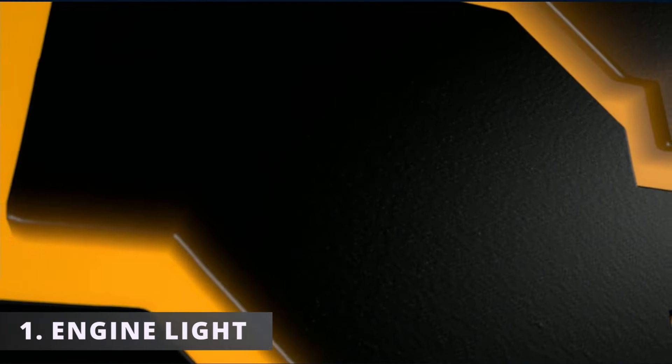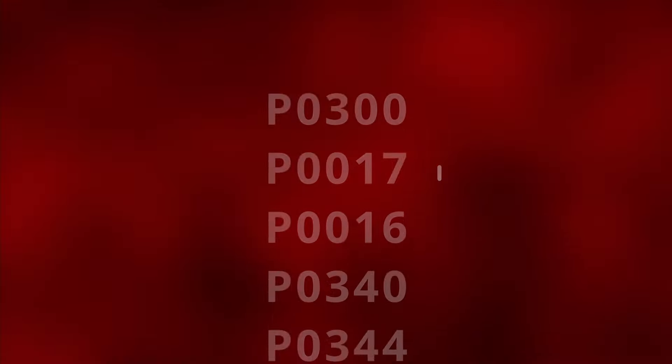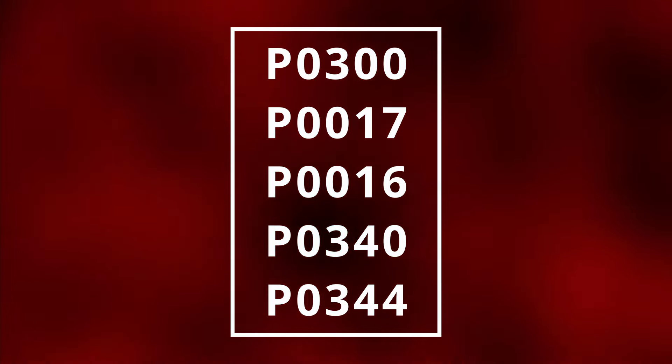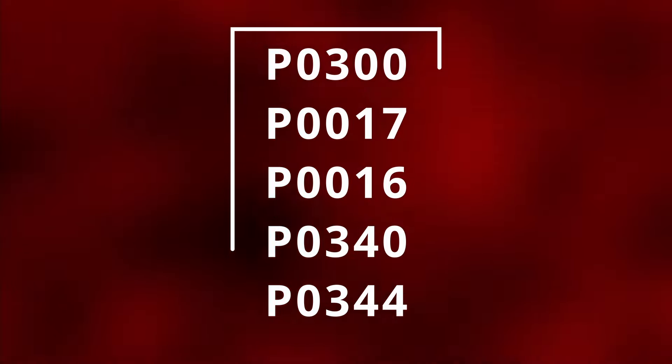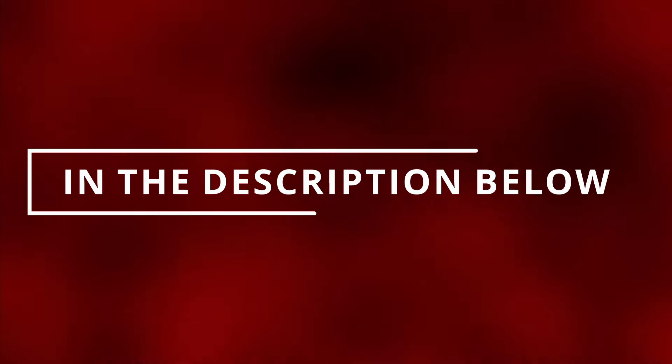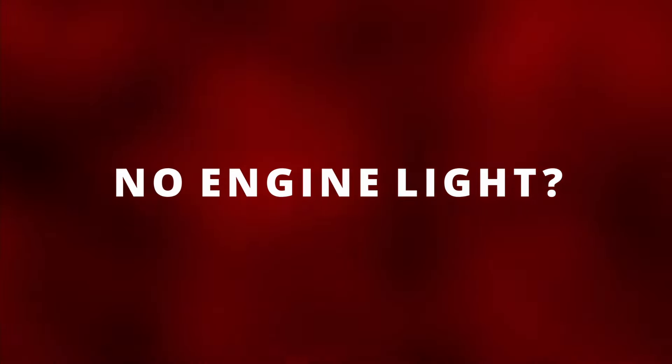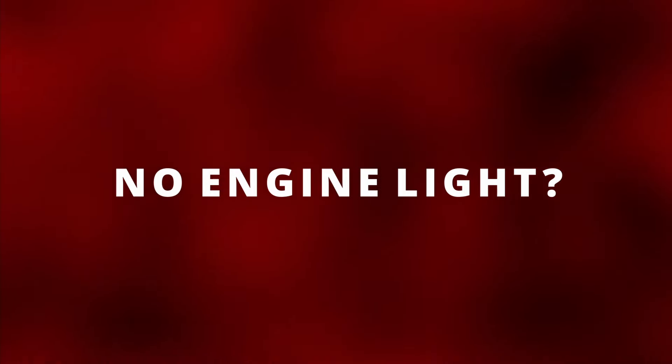The first symptom is having your check engine light on. Here's some codes that I've seen correlated to a defective timing chain or belt. You'll need an OBD2 scanner to read the codes. I'll leave the one that I use linked in the description below. Now you can still have a bad timing chain or belt with no check engine light so let's move on to the next symptom.